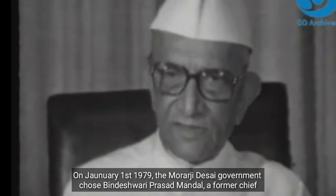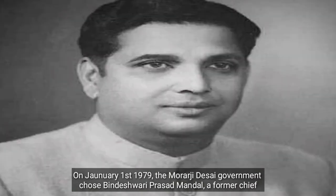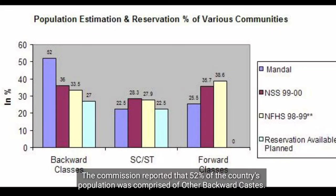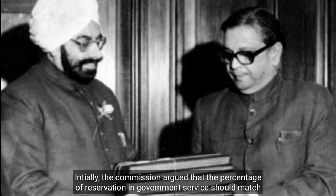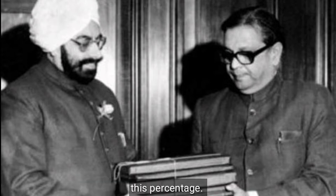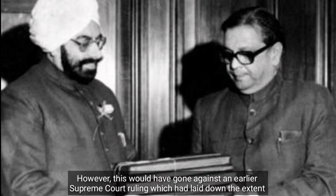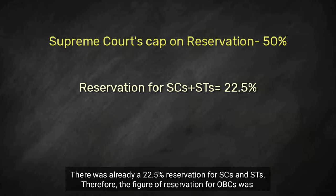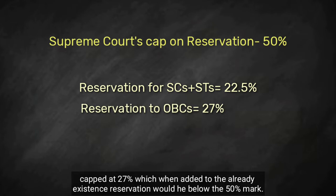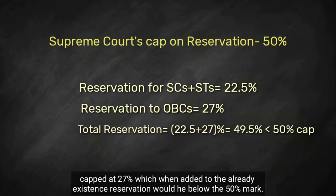On January 1, 1979, the Morarji Desai government chose Bindeshwari Prasad Mandal, a former Chief Minister of Bihar, to head the second Backward Classes Commission. The commission reported that 52% of the country's population was comprised of Other Backward Castes. Initially, the commission argued that the percentage of reservation in government service should match this percentage. However, this would have gone against an earlier Supreme Court ruling which had laid down the extent of reservation to under 50%. There was already a 22.5% reservation for SCs and STs. Therefore, the figure of reservation for the OBCs was capped at 27%, which when added to the already existing reservation would be below the 50% mark.